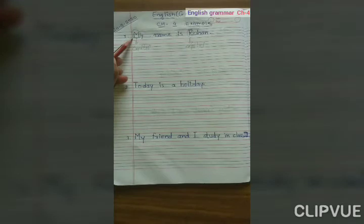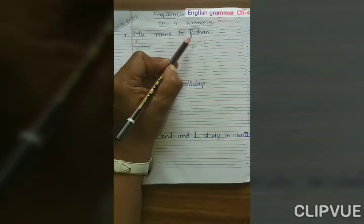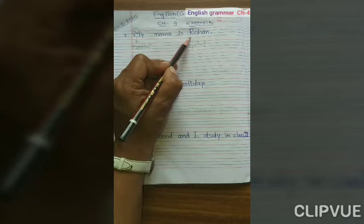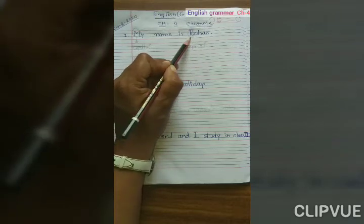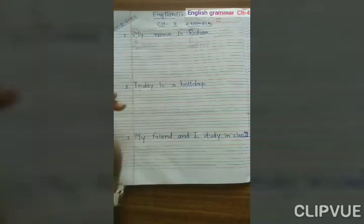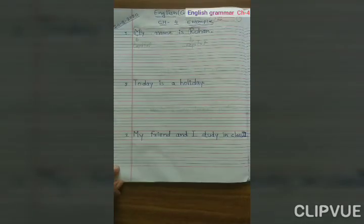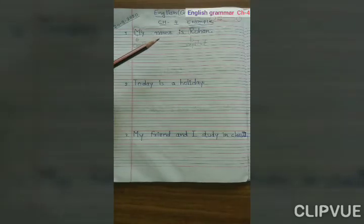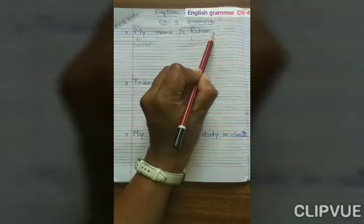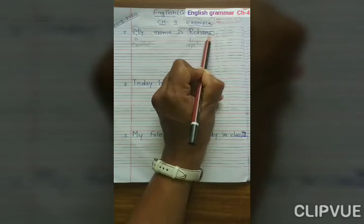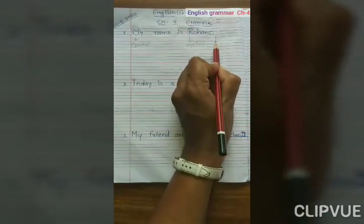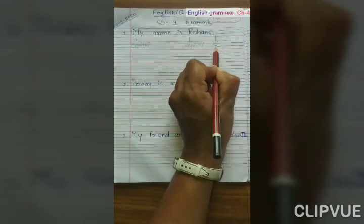M is the first letter. Name is Rohan — Rohan is the name of a person, a special name, so R should be capital. The name of a person is always written with a capital letter. Now after completing the sentence we will put a full stop.